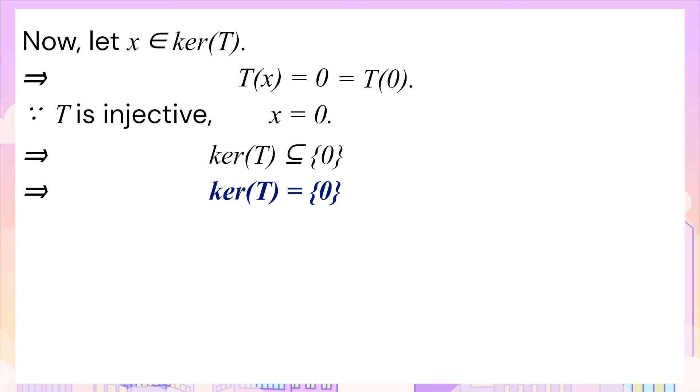This gives kernel of T is a subset of singleton zero. Hence the kernel of T is equal to singleton zero by the definition of equivalence of two sets by set inclusion.